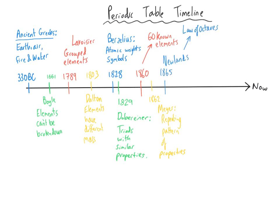Around about the same time, a scientist called John Newlands came up with his Law of Octaves, which was quite similar to the work of Lothar Meyer — grouping elements by atomic weight with repeating patterns of physical properties. Then in 1869 came the work of the famous Mendeleev, whose periodic table was really similar to what we use now, although there were some missing elements. It wasn't until 25 years later that William Ramsay discovered a new group — the noble gases.